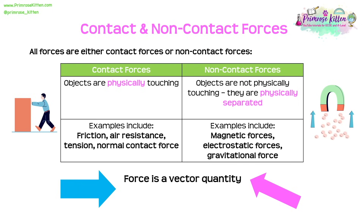Examples of non-contact forces include magnetic forces. If you've ever held two magnets together, you'll be able to feel them pulling together or pushing apart even though there's no physical contact. We also have electrostatic forces and gravitational forces. Don't forget that forces, whether contact or non-contact, are vector quantities — they always have magnitude but also direction.